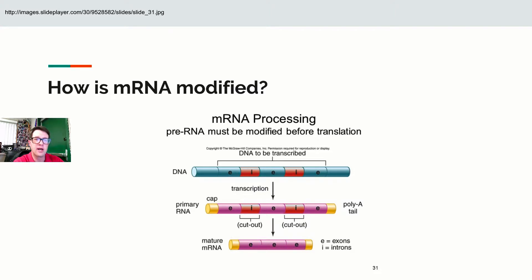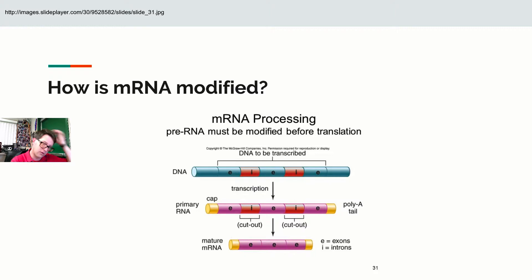Eukaryotes modify their RNA. This type of RNA is what we call mRNA or messenger RNA. We do three things: first, we take out chunks of the RNA called introns — segments of RNA that we are not going to turn into protein, used as buffers in case mutations occur. We also add a cap onto the 5-prime end called a 5-prime methylated guanosine or MEG cap, which signals 'I belong here, don't get rid of me.'